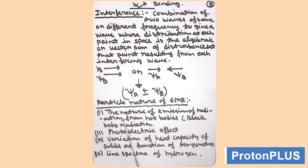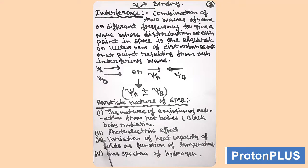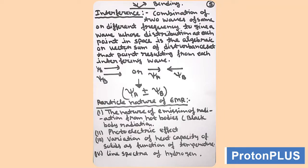Now we will take the particle nature of electromagnetic radiation. Four phenomena were not explained by wave nature: the nature of emission of radiation from hot bodies or black body radiation, the photoelectric effect, variation of heat capacity of solids as a function of temperature, and the line spectrum of hydrogen. These were not explained by wave nature, so the particle nature of electromagnetic radiation was discussed.